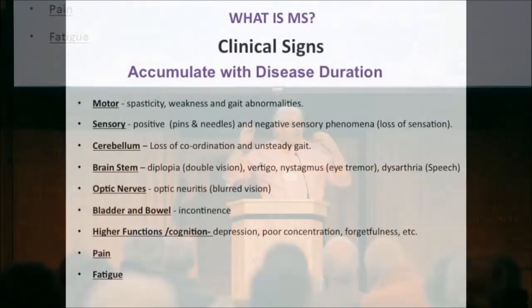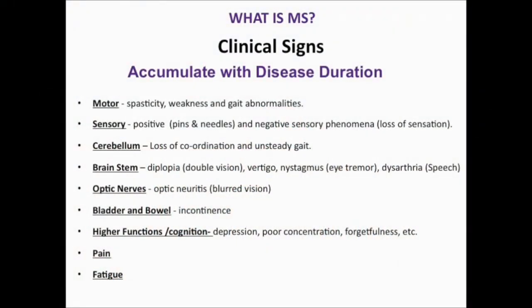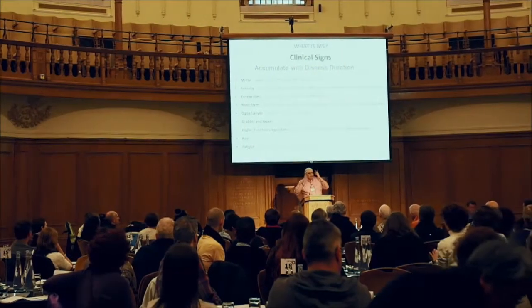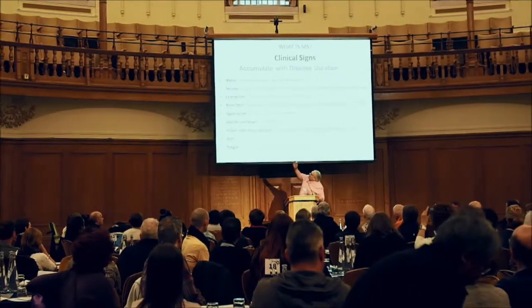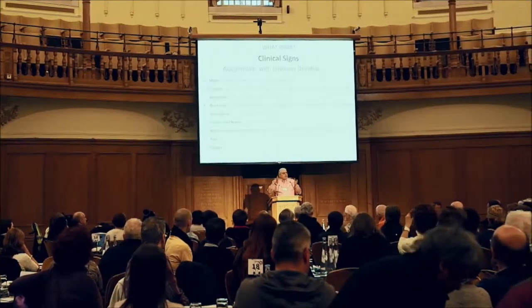The signs and symptoms of MS can be very varied and that just depends on where the MS attacks. It can affect your sensory system — how you feel things — causing numbness or pins and needles. If lesions are in the cerebellum it will affect your balance and coordination; in the optic nerve it can affect your vision; and it can affect bladder continence. The effects of MS can be very varied, depending on where in the nervous pathway the MS occurs.